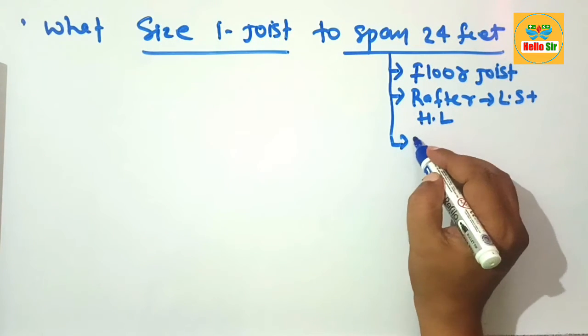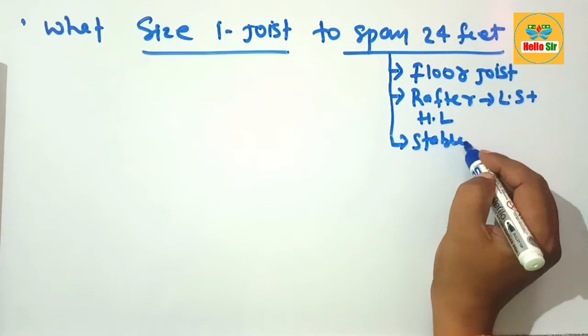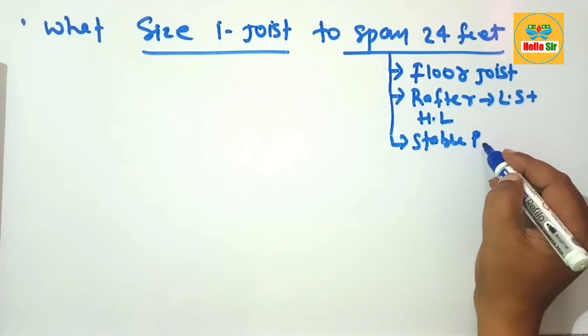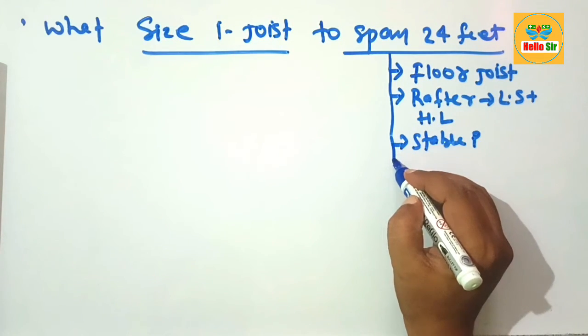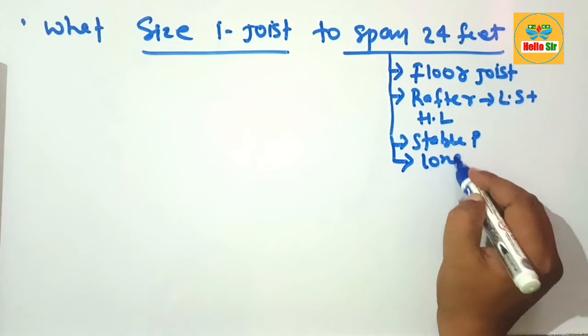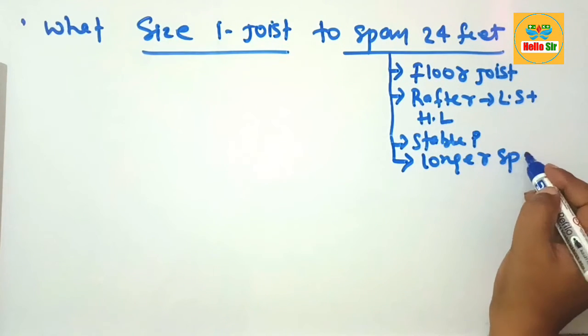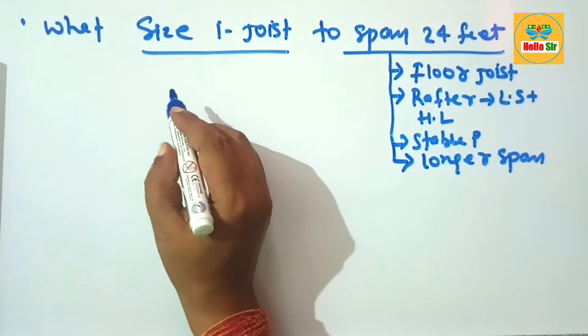It is a stable product that does not warp, twist, or shrink, and it can be used for longer spans. These are several properties of wood I-joists.